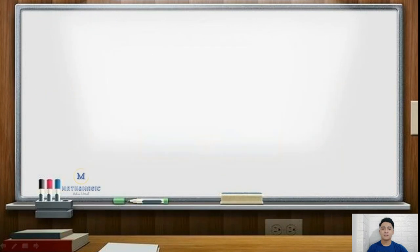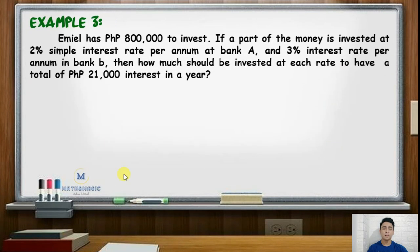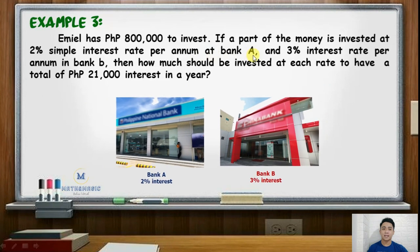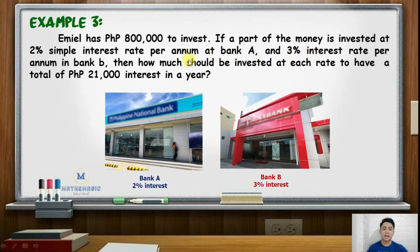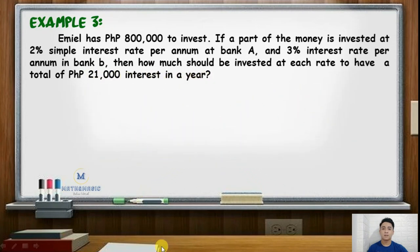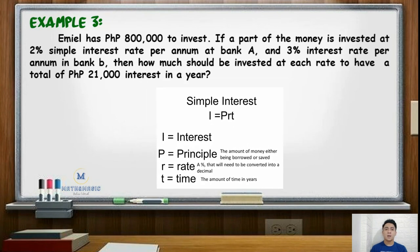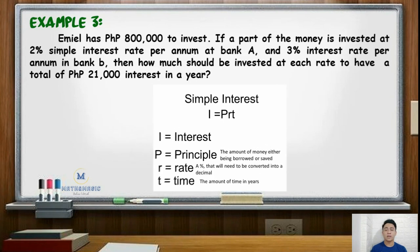For our last example, an investment problem: Emil has 800,000 pesos to invest. Part of the money is invested at 2% simple interest rate per annum at Bank A, and 3% interest rate per annum at Bank B. How much should be invested at each rate to have a total of 21,000 pesos interest in a year? When dealing with simple interest investment problems, one must be familiar with the formula I equals PRT, where I is interest, P is principal, R is interest rate, and T is time.